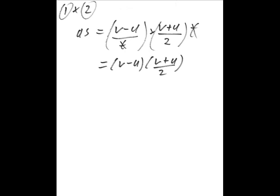Firstly, we combine together our two equations by multiplying them. We have an equation for acceleration and an equation for displacement, so we will now have an equation for displacement multiplied by acceleration, AS.